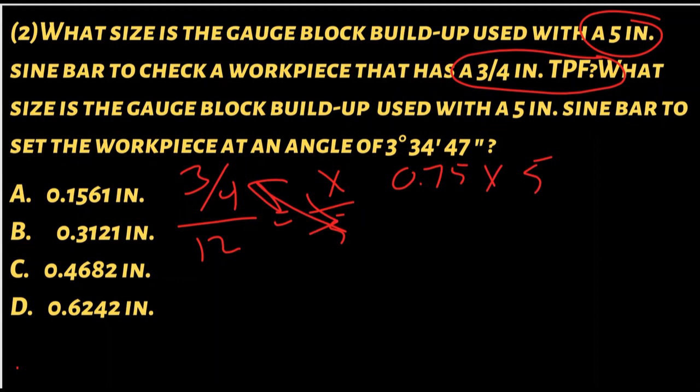So if we go 0.75 times, we'll cross multiply here, times 5, then we say equals, then divided by 12 equals, which will turn out to be 0.3125, which is pretty darn close to this guy here. That's just another way of figuring it out.